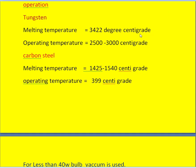Coming to the operation. So here we can use the filaments. It may be tungsten or carbon steel. Suppose we use the carbon steel, its melting temperature is 1425 to 1540 degrees centigrade. Whereas its safe operating temperature is 399 degrees centigrade.